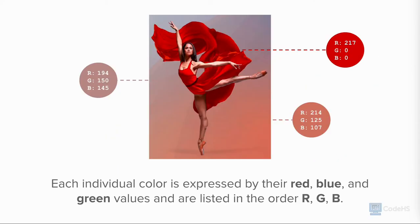To describe a digital color, each individual color is described by their red, green, and blue value, and are listed in the order red or R, green or G, and blue or B. In other words, digital colors are represented by their RGB values.